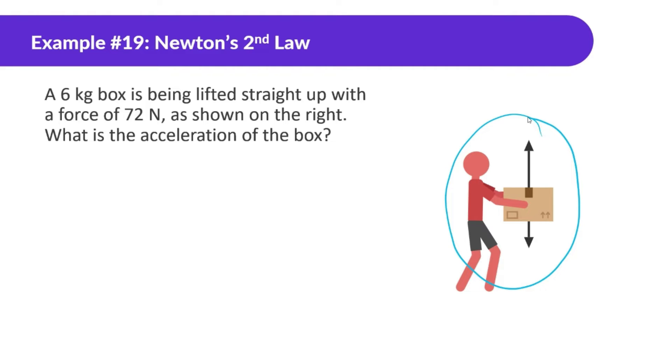Example 19. A 6-kilogram box is being lifted straight up with a force of 72 Newtons as shown on the right. What is the acceleration of the box?